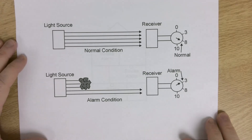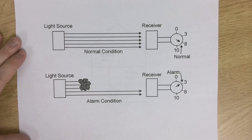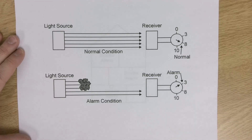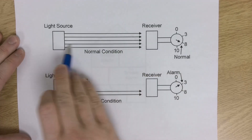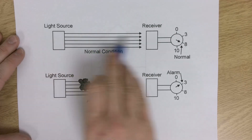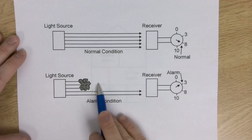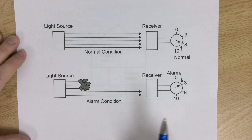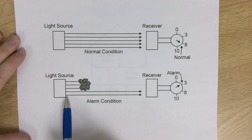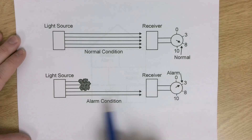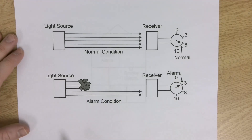The photoelectric smoke alarm uses a light source that keeps sending light to a receiver. As long as the light hits the receiver, everything is fine. But when there's a fire, or if you burn your fajita fixings and create a bunch of smoke from cooking peppers, the smoke gets in the way of the light source. The smoke alarm says it's not getting enough light to the receiver, so it starts chirping and making noise to let people know there's smoke.